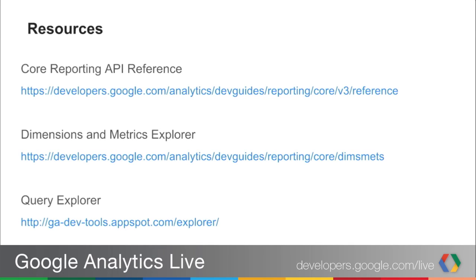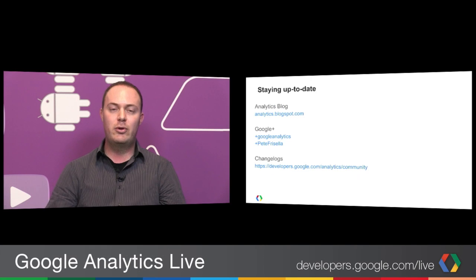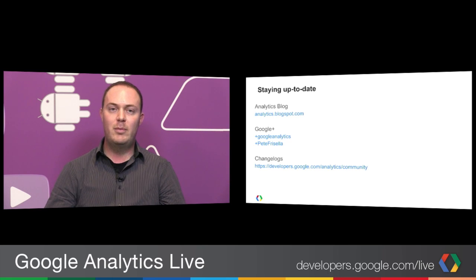So to wrap up, those are the big features released this past month: updates to the Dimensions and Metrics Explorer and the Query Explorer, a new sampling level parameter, relative dates, and new dimensions and metrics including AdSense, ISO year/week, and AdWords keyword match type. All of this can be learned about from the Core Reporting API reference. You can also visit our blog at analytics.blogspot.com, our Google Analytics G+ profile, or follow me at Pete Frizella. I especially recommend subscribing to our changelogs for the Core Reporting API and Management API — available via RSS feed or by visiting the page directly.